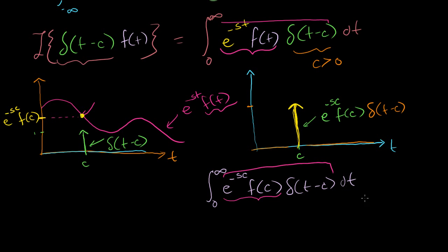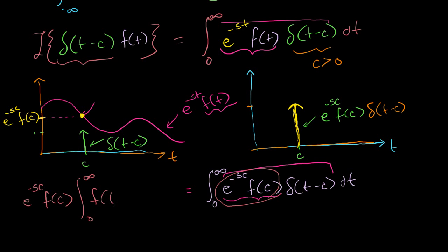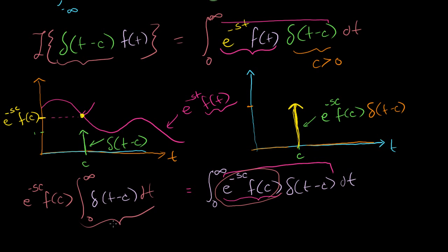Since this is a constant, we can bring it out of the integral. So this is equal to e to the minus sc times f of c, times the integral from 0 to infinity of delta of t minus c dt. Now what is this integral by definition? This thing is 1 — we could put it from minus infinity to infinity, it doesn't matter; the only time where it has any area is right under c. So this thing equals 1, and the whole integral has been reduced to e to the minus sc times f of c.